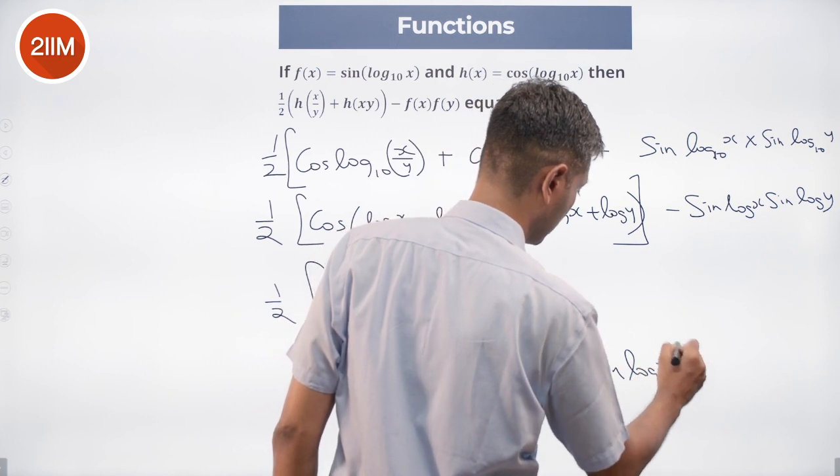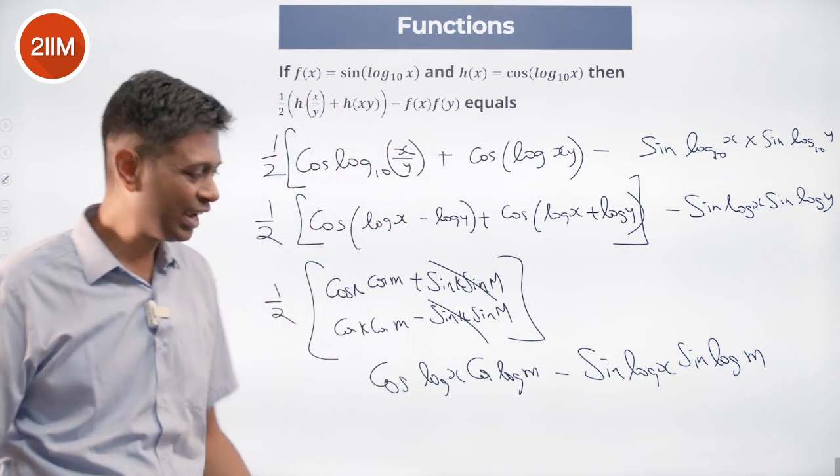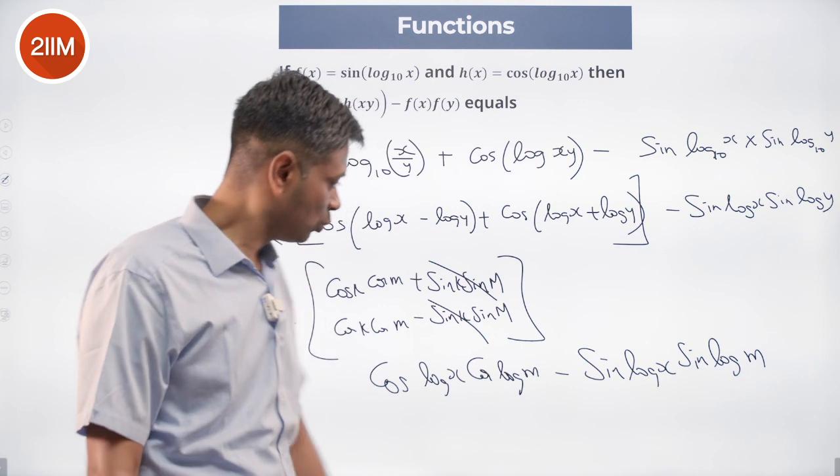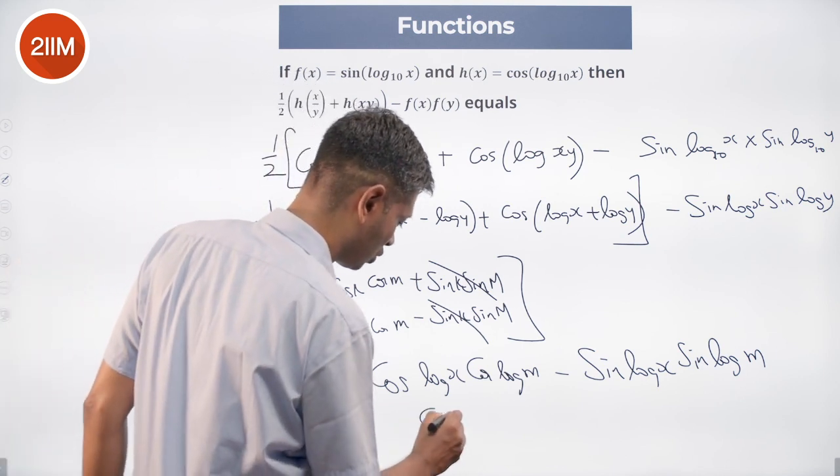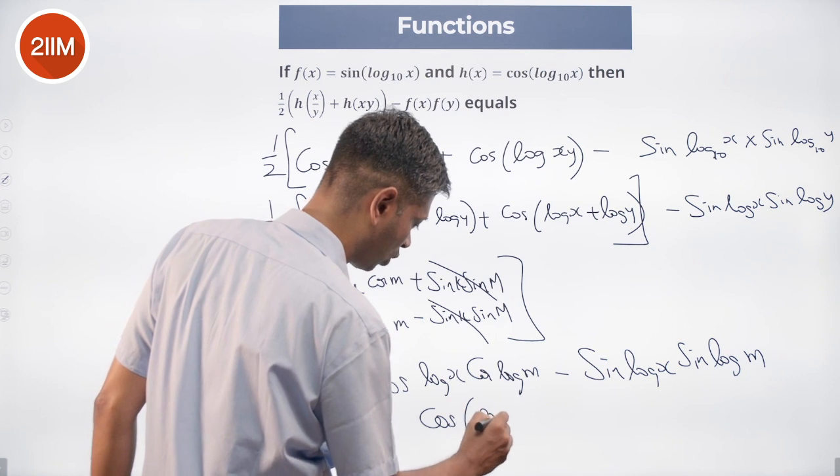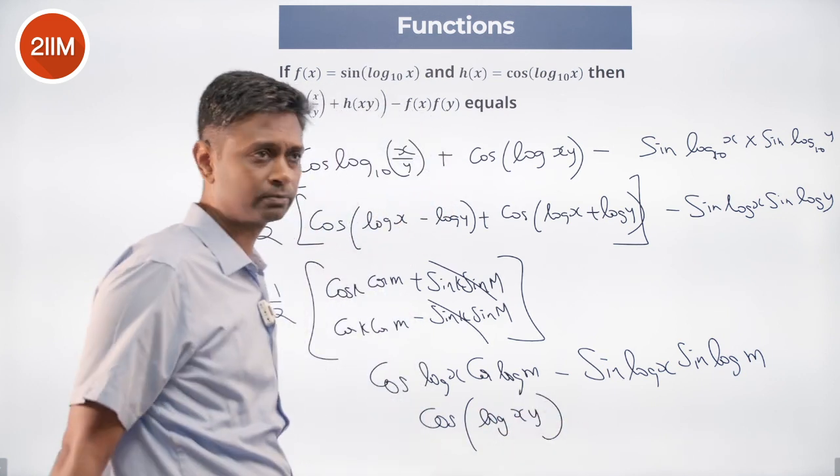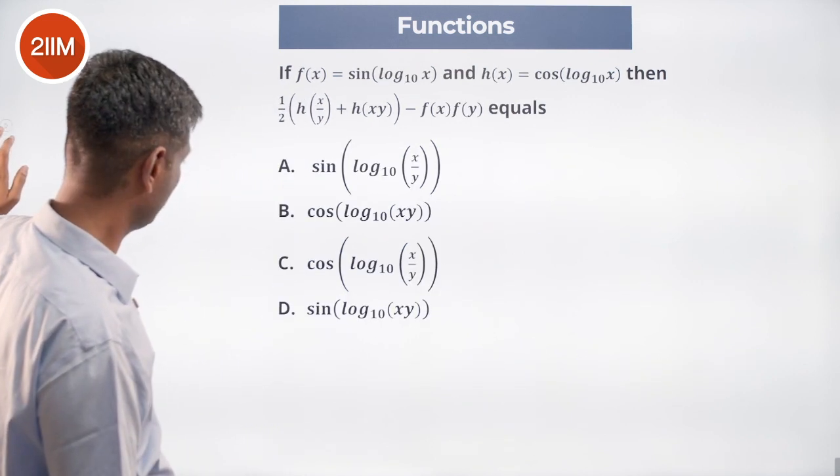This is cos a cos b minus sin a sin b, just cos of a plus b. So I'm looking for cos of log X plus log Y, just cos(log X) one cos(log XY). You see that is there in the choices.